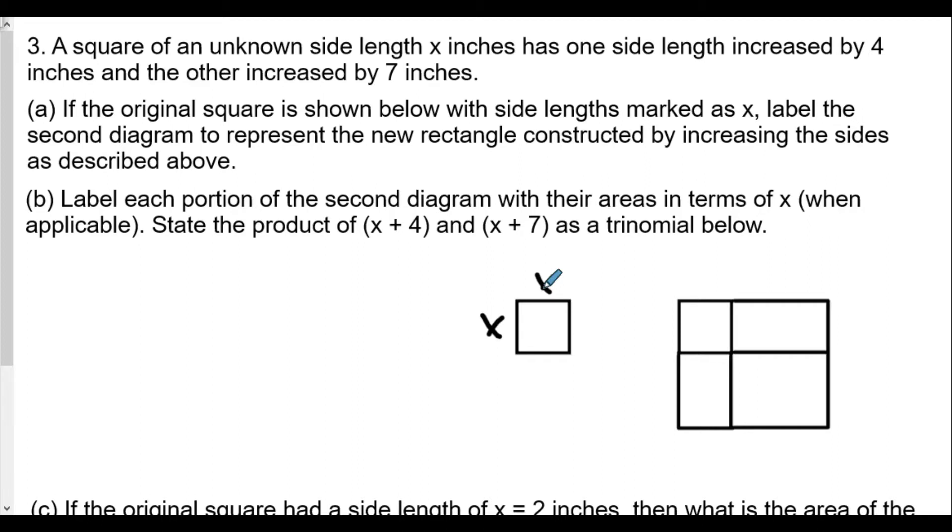label the second diagram to represent the new rectangle constructed by increasing the size as described above. So the original square is this one here, and so here is x and x. Now it says here that the sides are increased by 4 inches, so this will be the increase by 4, and this will be the increase by 7 on this side here, plus 7.